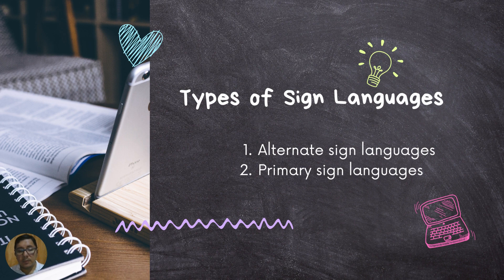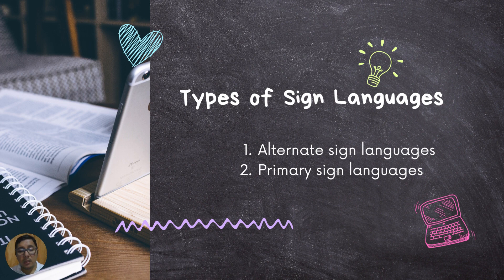We have here types of sign languages. There are two main categories: alternate sign languages and primary sign languages. Alternate sign languages are systems of hand signals developed for limited communication in a specific context where speech is not possible. They are not considered full languages and are often used alongside a spoken language.